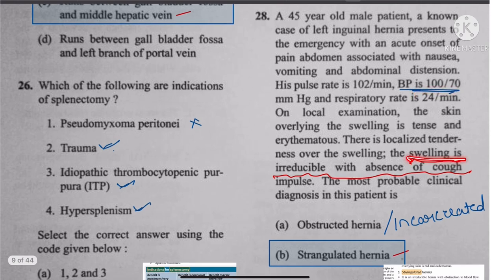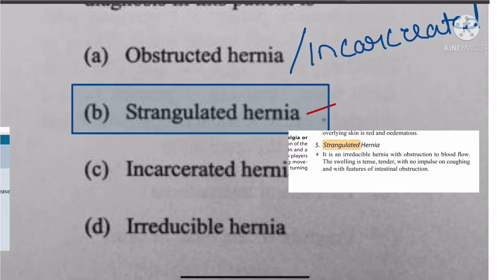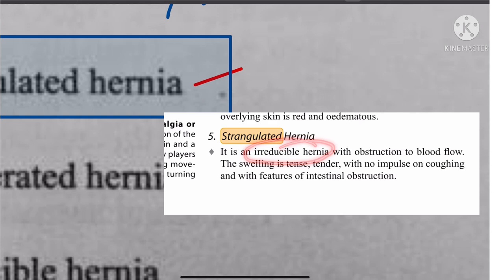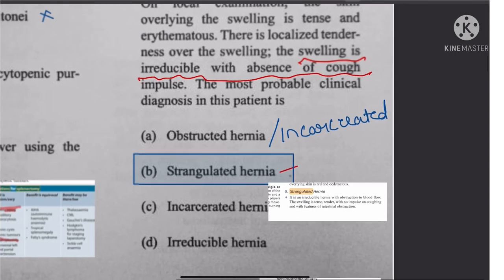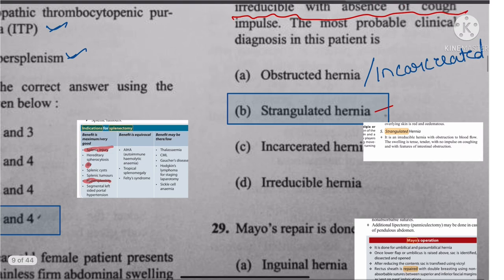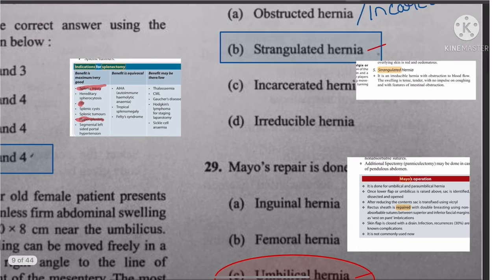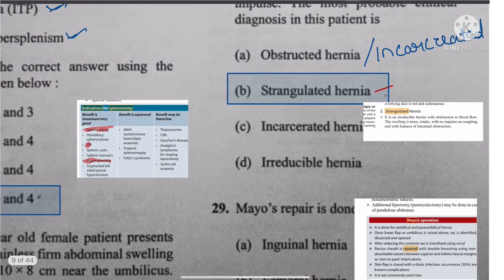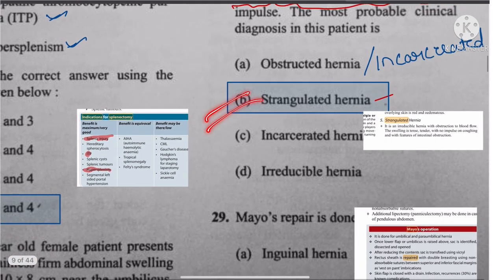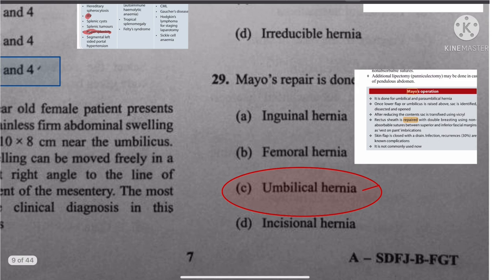Question 28: BP is 100/70, swelling is irreducible with absence of cough impulse — controversial but the book says strangulated hernia is irreducible, has obstruction to blood flow, swelling is tense and tender with no impulse on coughing, and has features of intestinal obstruction. The answer is strangulated hernia. Obstructed hernia is only irreducible without blood flow obstruction.